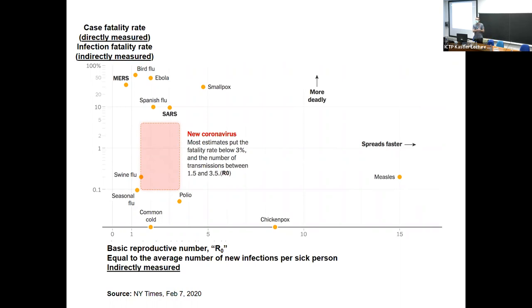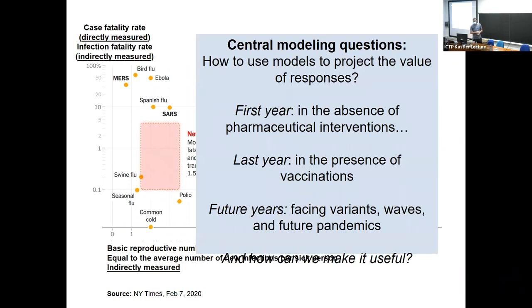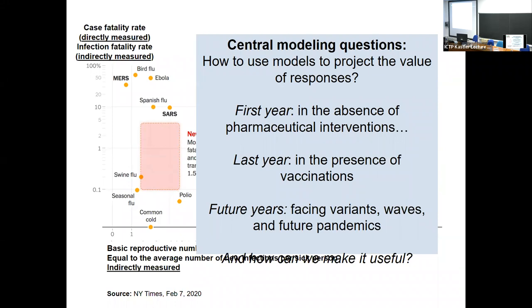So there's an issue between what we observe and what we'd like to know. We can't directly know R0 and we can't directly know the infection fatality rate when we don't ascertain all cases. In the first year there were very few ways to intervene pharmaceutically — there were non-pharmaceutical interventions. The question persists into future years: how do we face variant waves, how do we test and treat, and how can we make this theory useful?